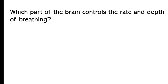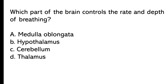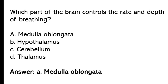Which part of the brain controls the rate and depth of breathing? Medulla oblongata, hypothalamus, cerebellum, thalamus. So the correct answer is option A, medulla oblongata. Medulla oblongata is the part of the brain which controls the rate and depth of breathing.